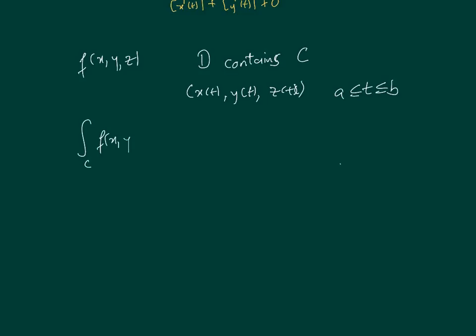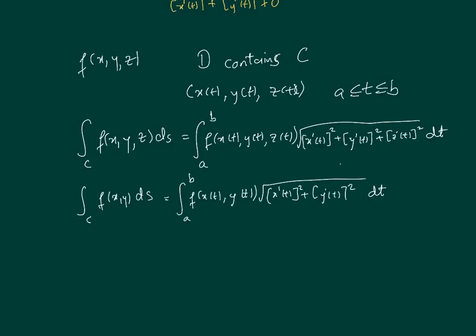Practically, we calculate it as the integral from a to b of f(x(t),y(t),z(t)) times √(x'² + y'² + z'²) dt. You'll see why the smoothness condition is important, because otherwise this would be 0 and the entire integral disappears. This is the practical way to calculate any line integral. There is a 2D version as well. Now we're in a position to look at some examples.